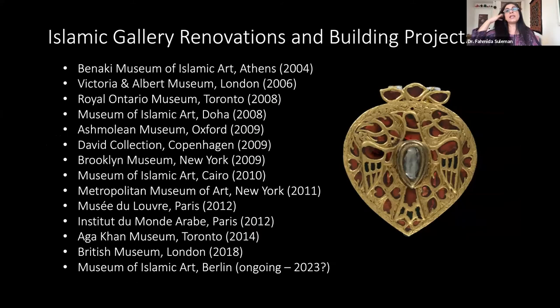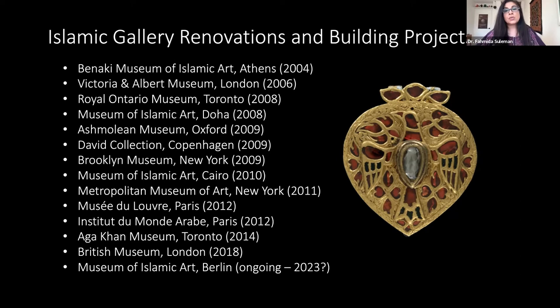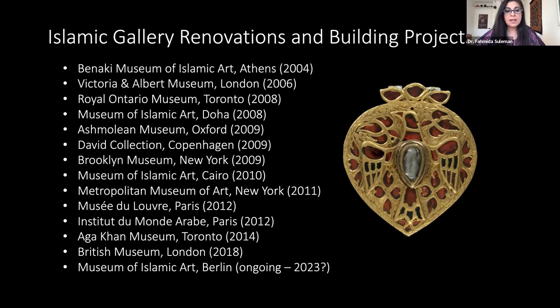The team also did their homework: within a decade between 2004 and 2014, there were 12 brand new museums or complete or partial refurbishments of Islamic galleries and museums around the world. This wave of renovations happened partly because after 9/11 in 2001, there was a lot of interest in Islamic culture, religion and material culture. The British Museum's new gallery came at the tail end in 2018, with the Museum of Islamic Art in Berlin still ongoing. The team visited some of these places and got advice from colleagues about what worked and what didn't.